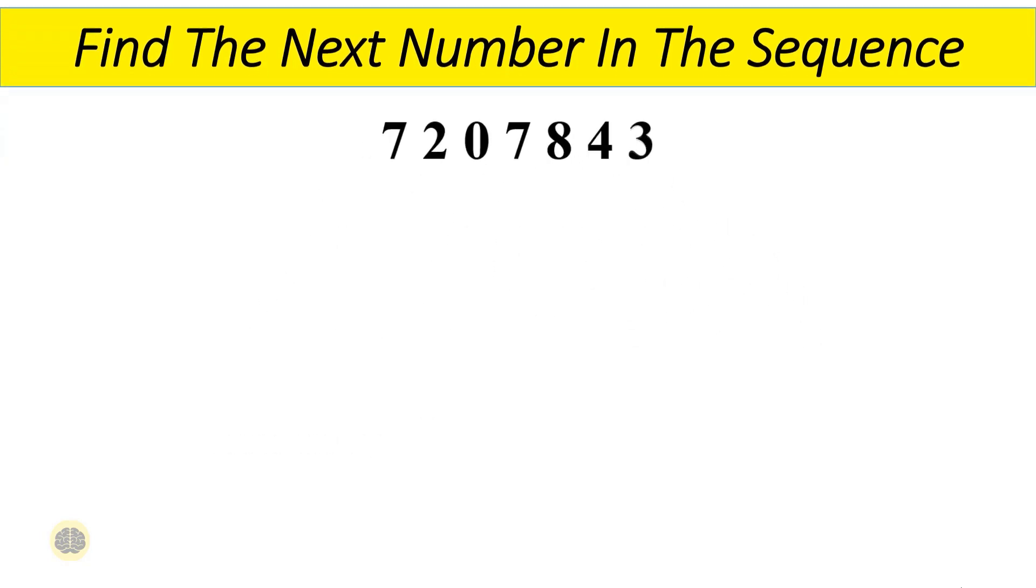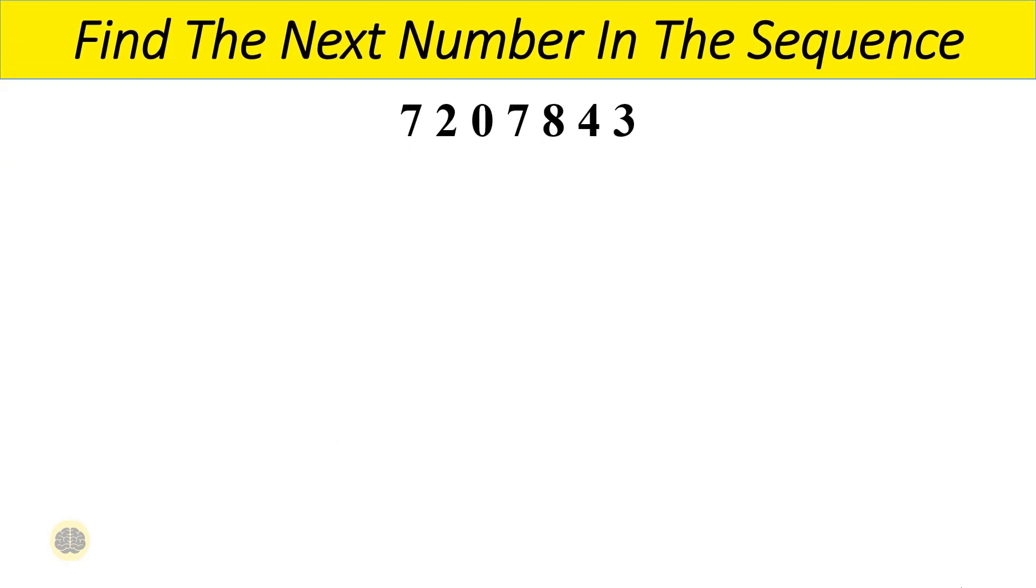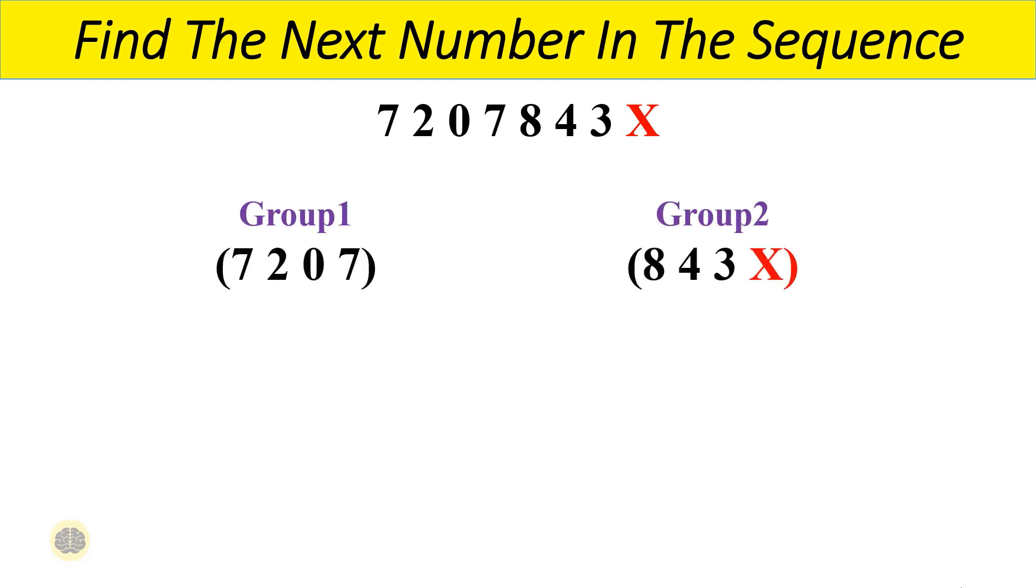Let me explain the solution now. Let us first assume that the required number or the next number in the sequence is x. So the number sequence now becomes 7207843x. Let us first divide the sequence and put them into two separate groups. The first group is 7207 and the second group is 843 and x.